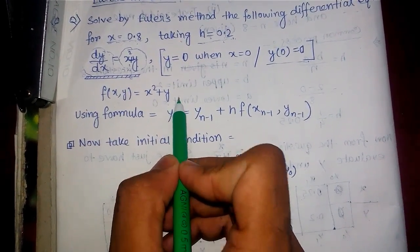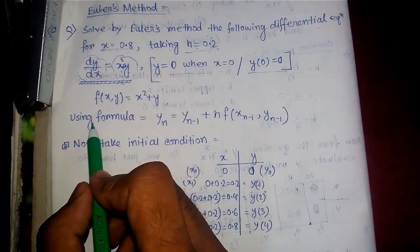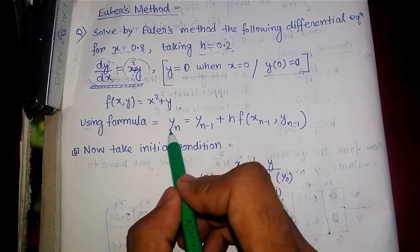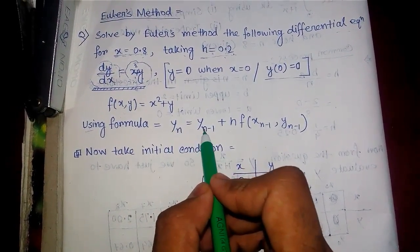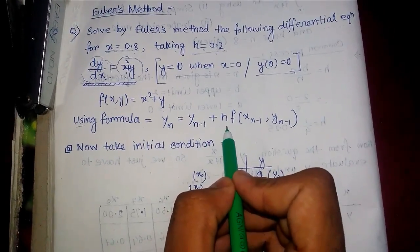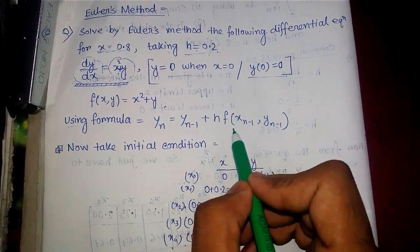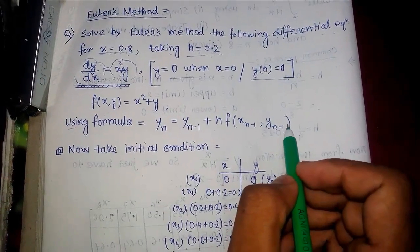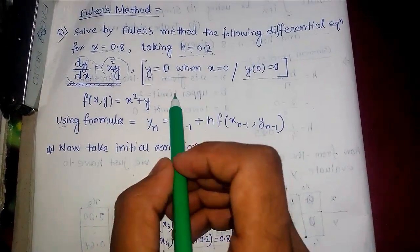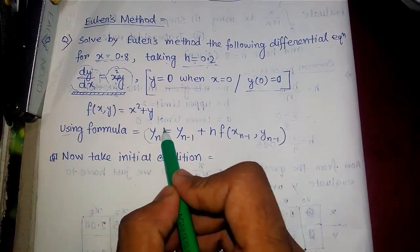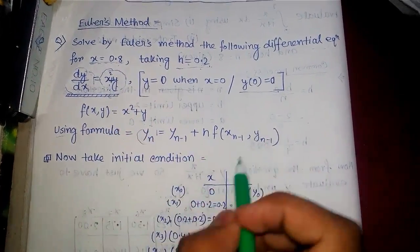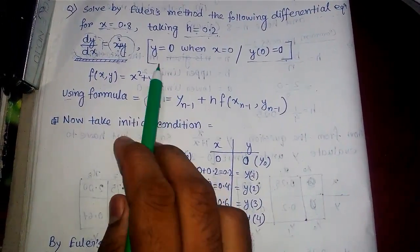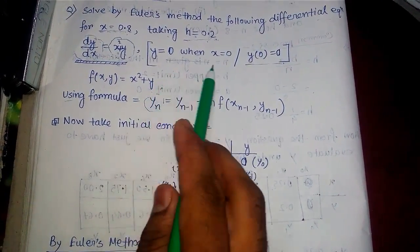So f(x, y) equals to x squared plus y. Euler's method has a formula: y_n equals to y_(n-1) plus h times f of x_(n-1) and y_(n-1). We just have to calculate y_n. Now we'll take the initial condition and go forward.